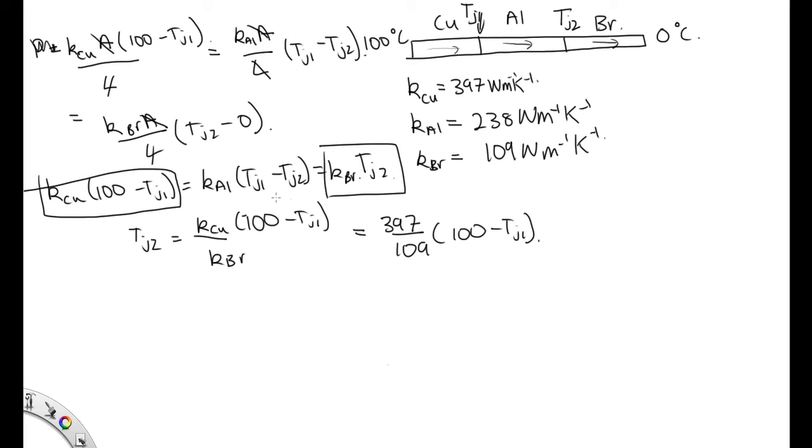Now what we can do is use this part and this part. Let's call this one, two. Use one and two, and we can substitute in this for our TJ2.